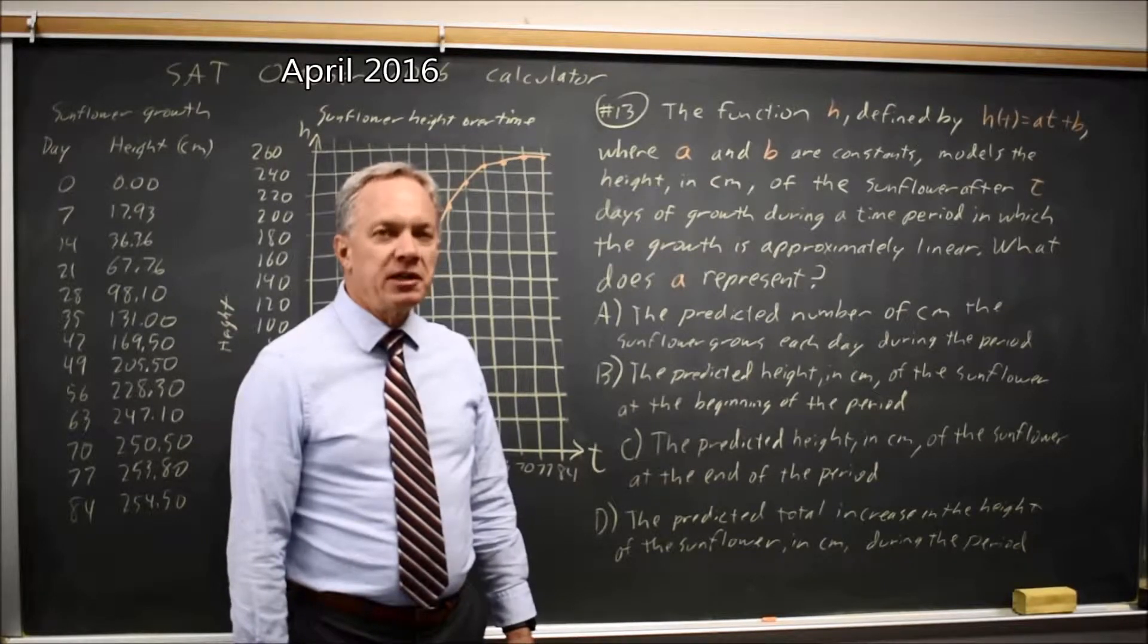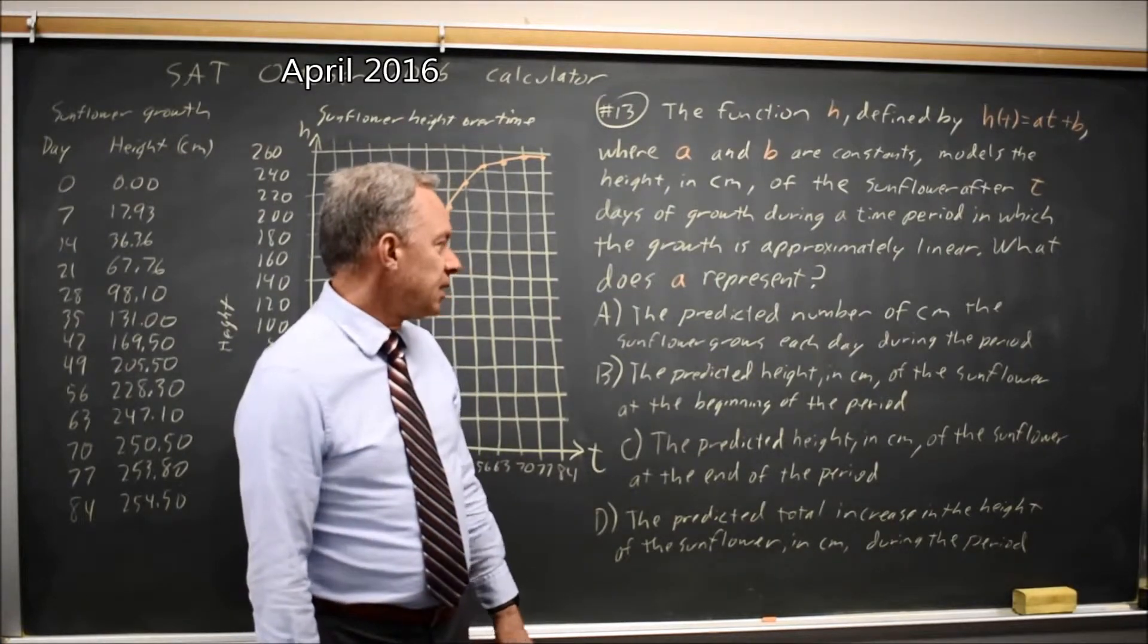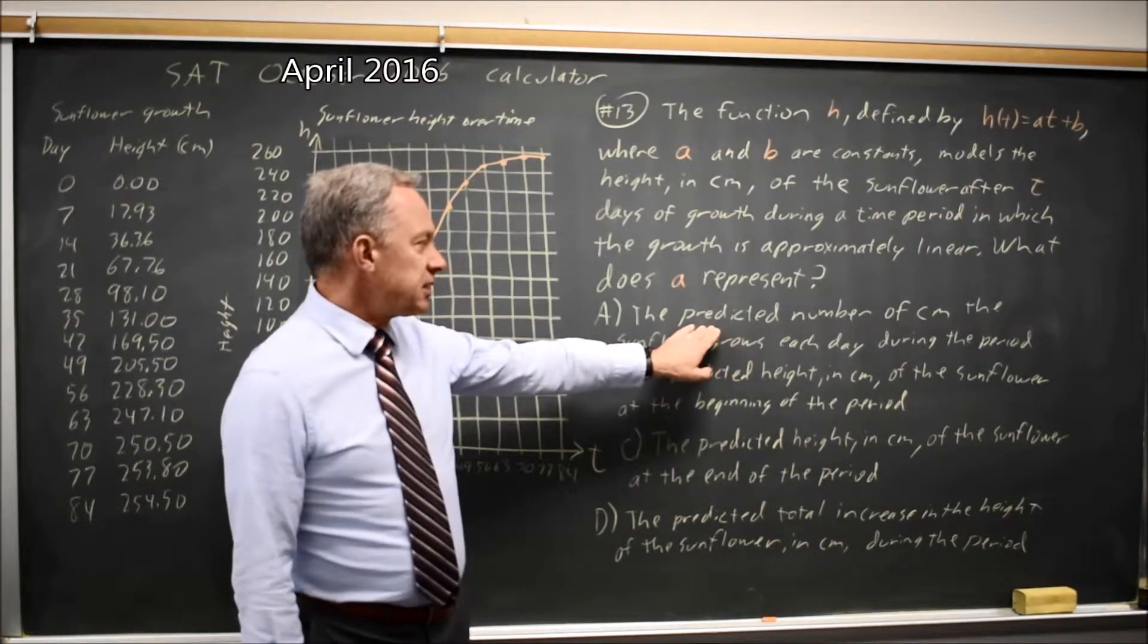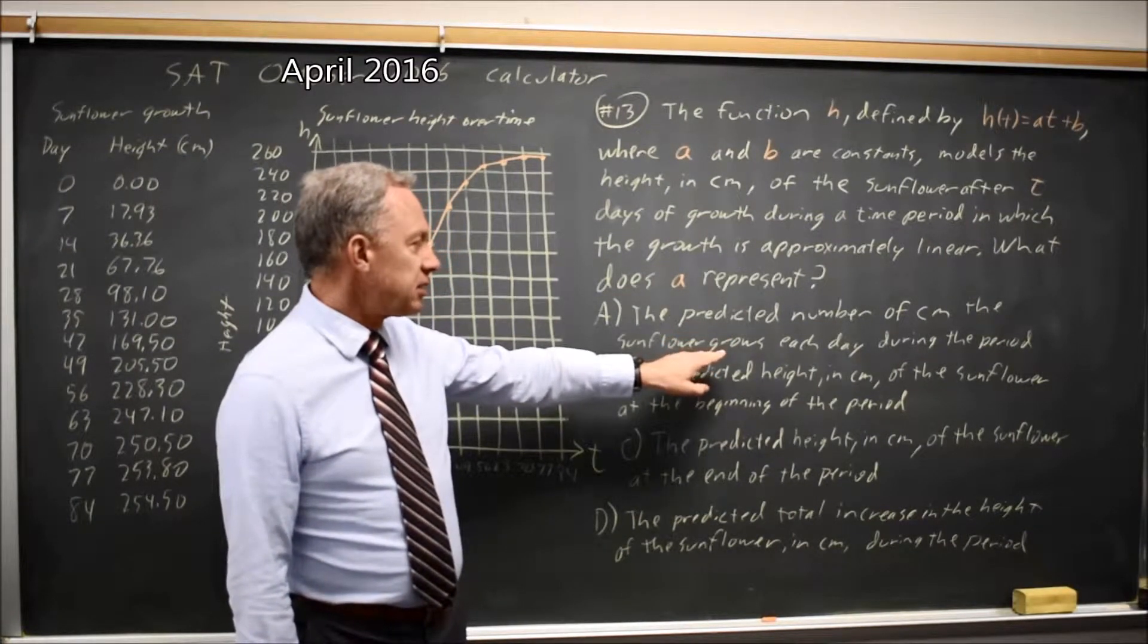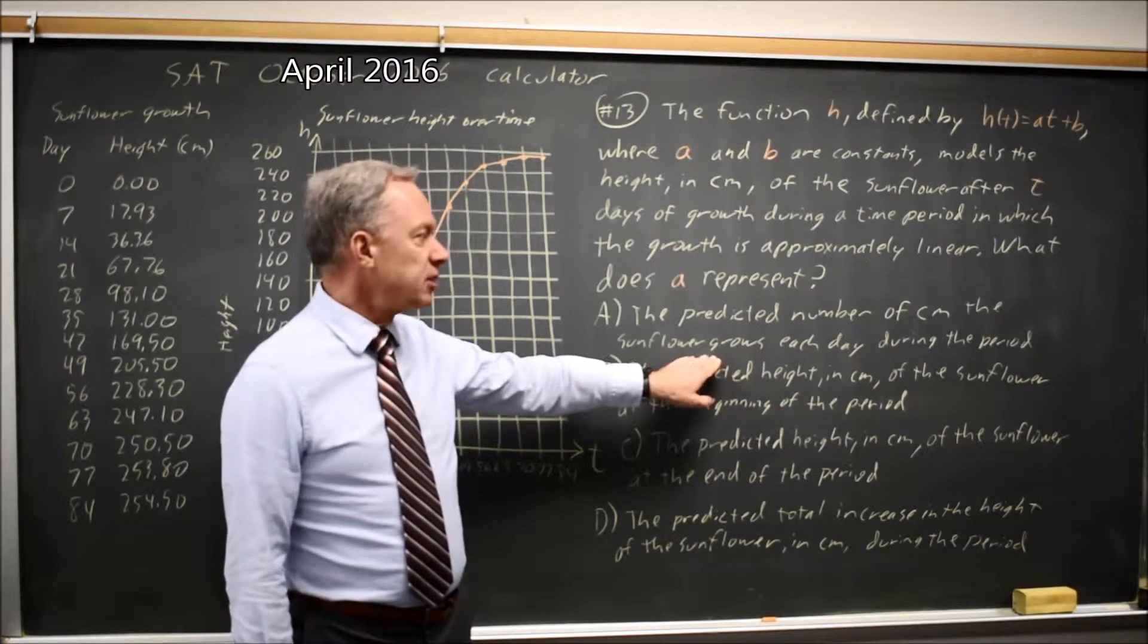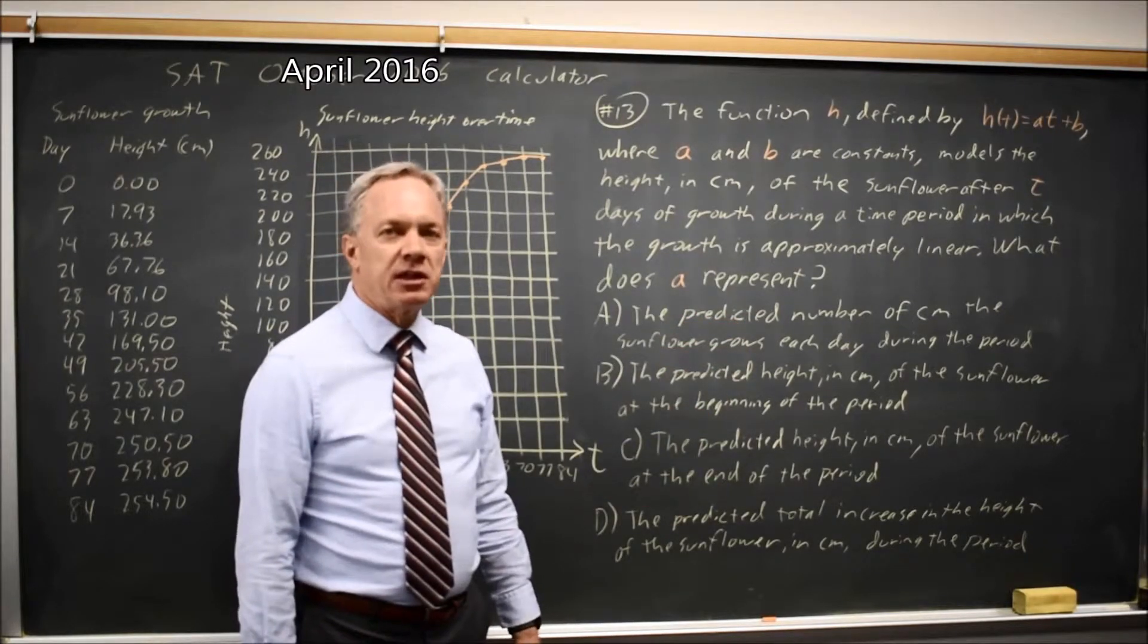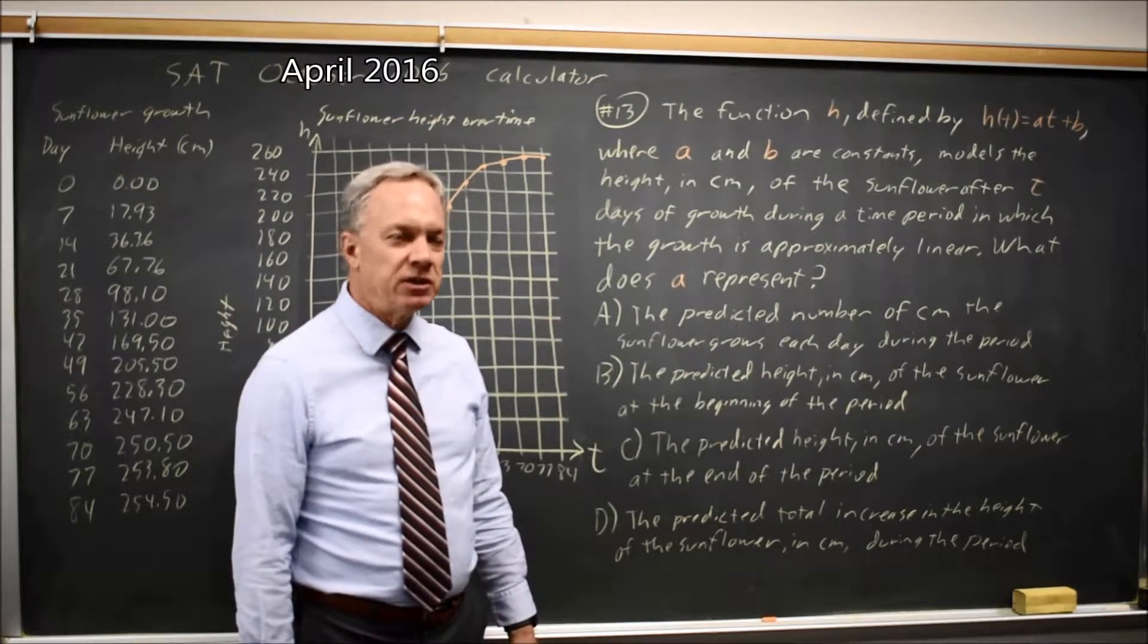The slope is the amount that y increases when t goes up by 1. So choice a is the predicted number of centimeters the sunflower grows each day during the period. Each day is t going up by 1, and number of centimeters the sunflower grows is the amount that h of t, the height of the sunflower, increases.